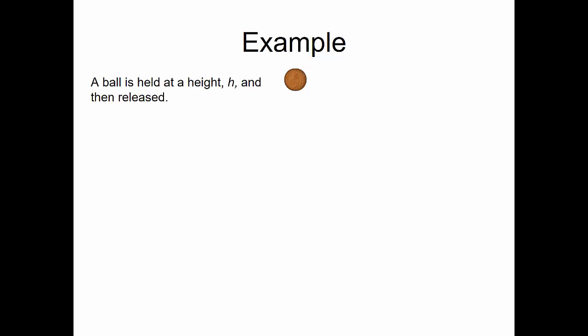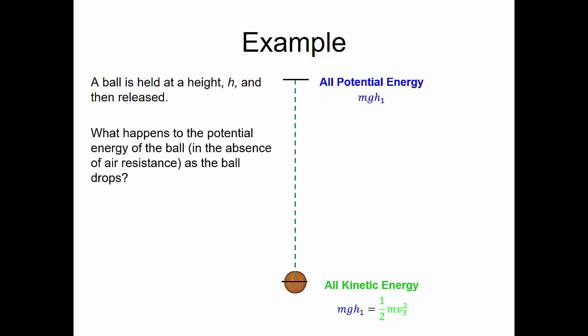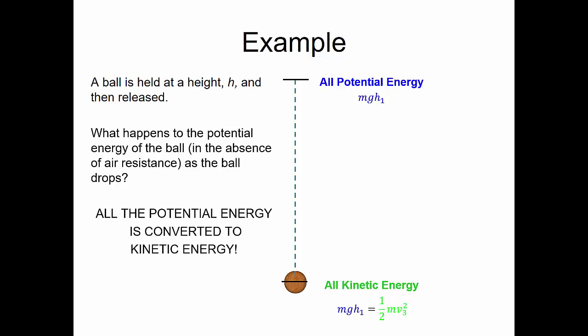Here's an example. If we hold a ball at a height h and then release the ball, what happens to the potential energy of the ball in the absence of air resistance as the ball drops? Initially, all of the energy is potential energy — mass times gravity times the initial height. When we drop the ball, at the bottom of the drop, all of the energy has been converted to kinetic energy, one-half mass times the velocity squared. All potential energy is converted to kinetic energy.